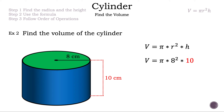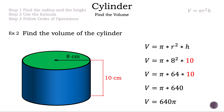Let's follow the order of operations and square 8. The result is 64, so now we have volume equals pi times 64 times 10. Multiplying 64 and 10 gives 640, so volume equals pi times 640. Remember, we flip those: volume equals 640 pi. We can't forget our units — centimeters cubed. And that is the volume of this cylinder.